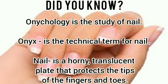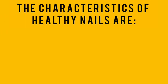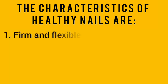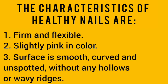In addition to that, onychology is the study of nail, while onyx is the technical term for nail. A nail is a horny translucent plate that protects the tips of the fingers and toes. The characteristics of healthy nails are: number one, firm and flexible; two, slightly pink in color; three, surface smooth, curved, and unspotted without any hollows or wavy ridges.